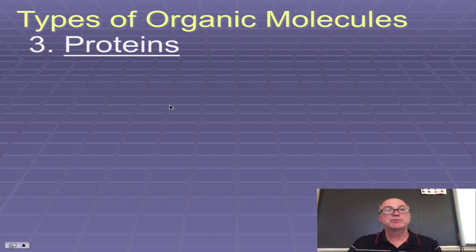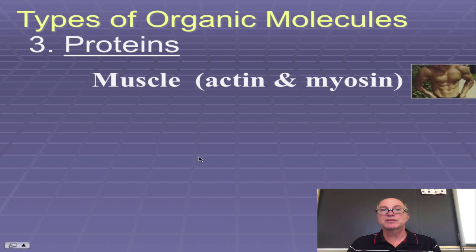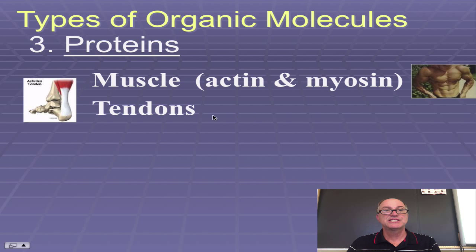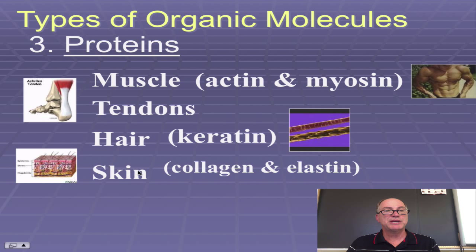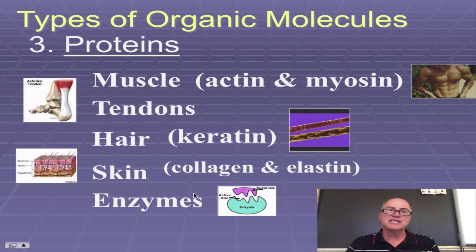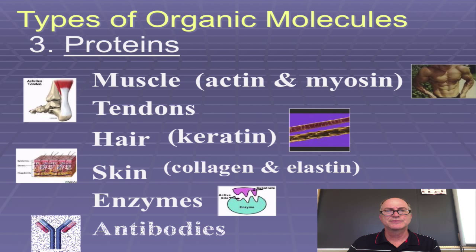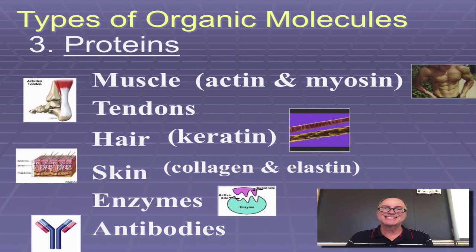Another type of organic molecule that's very important in our body are the proteins. Proteins consist of things like actin and myosin, which make up our muscle. Tendons that hold our muscle to the bone. Hair is made of a molecule called keratin, which is a protein. Skin has two major proteins, collagen for toughness and elastin for elasticity. And enzymes that actually do the jobs and speed up the chemical reactions in our body. And finally, antibodies, which fight off infection, are made out of proteins. So in essence, proteins are a very diverse group of organic compounds that do pretty much all the jobs in our body.